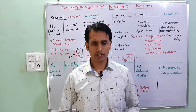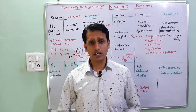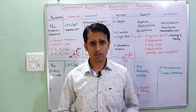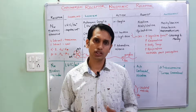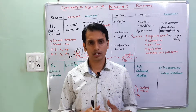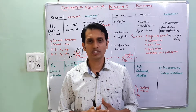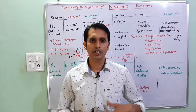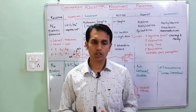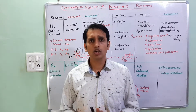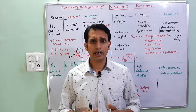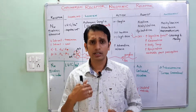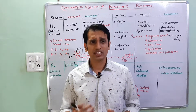Hello friends, welcome to my channel. In this video I am going to discuss nicotinic receptors, which are part of acetylcholine receptors. We know that acetylcholine receptors are mainly divided into two types: first is the muscarinic and second is the nicotinic. We have talked about muscarinic in the first video, and in this video I will discuss their types, location, and actions.